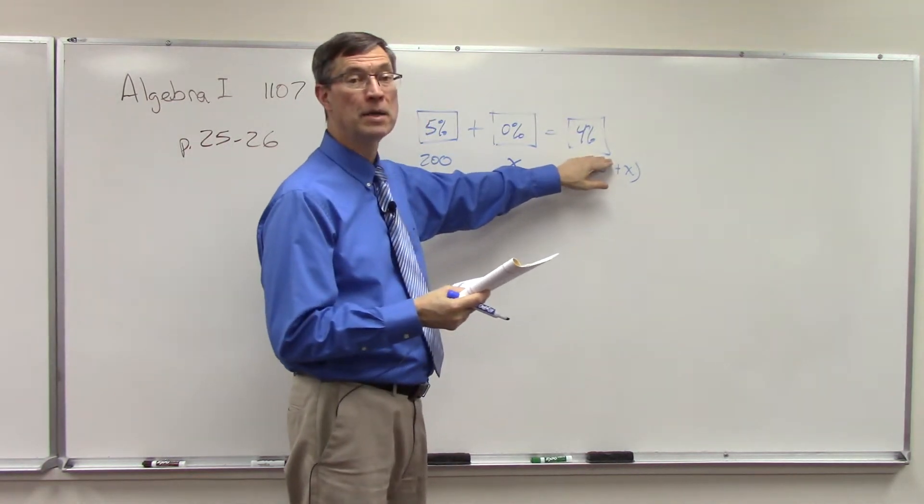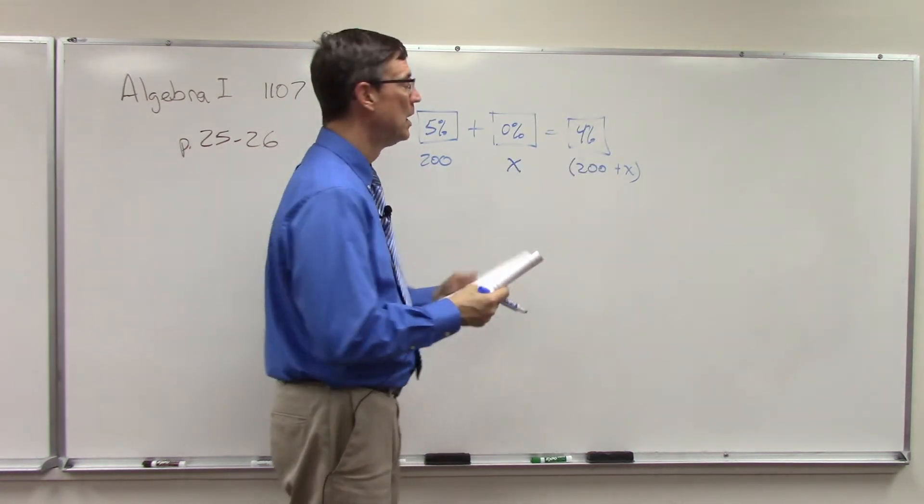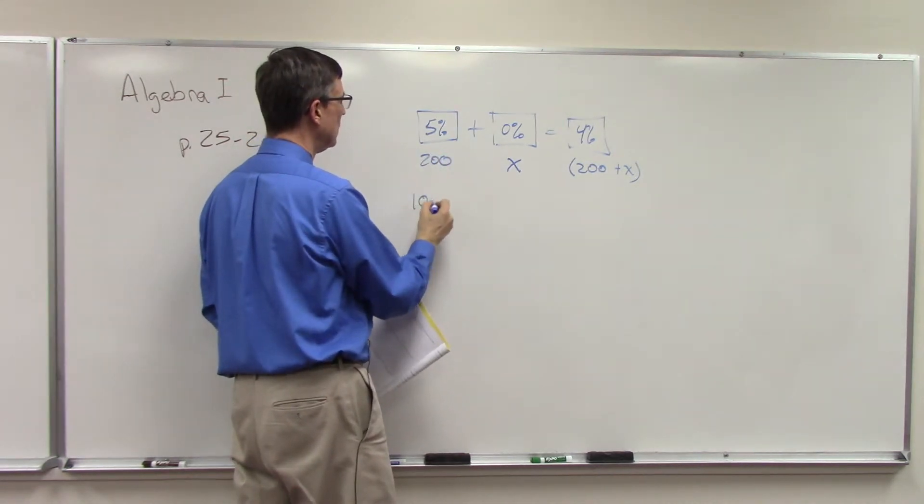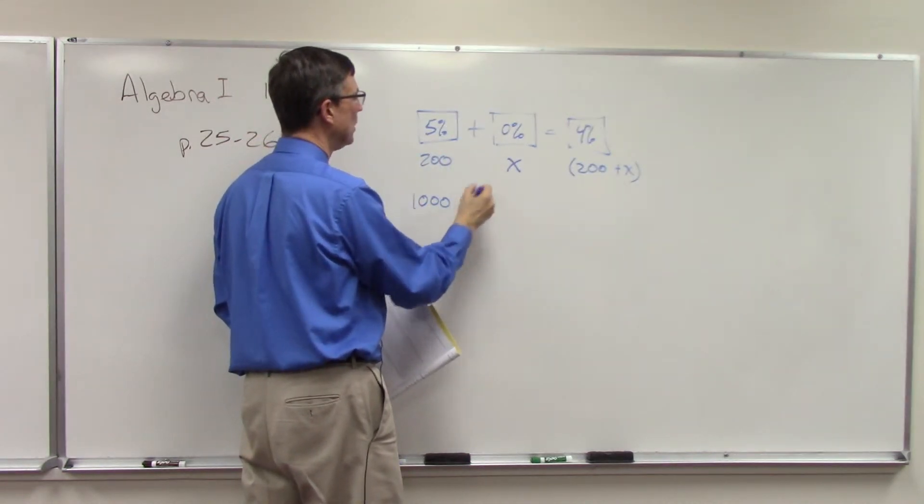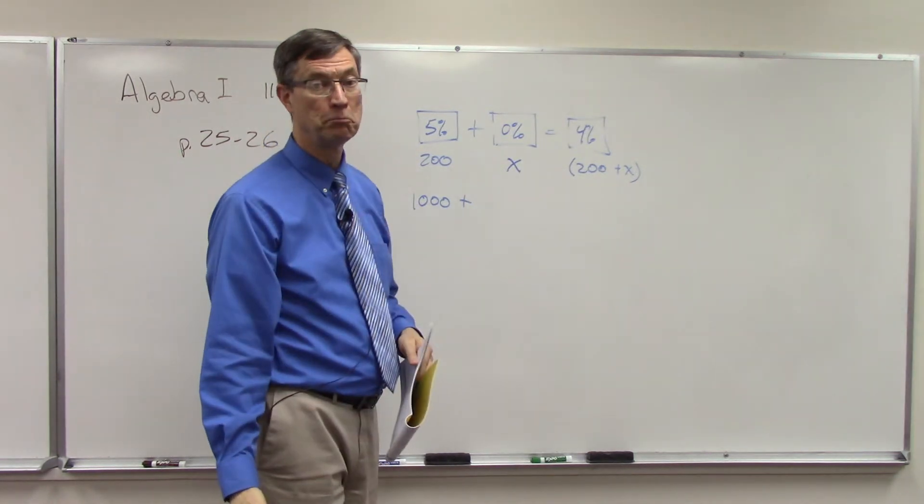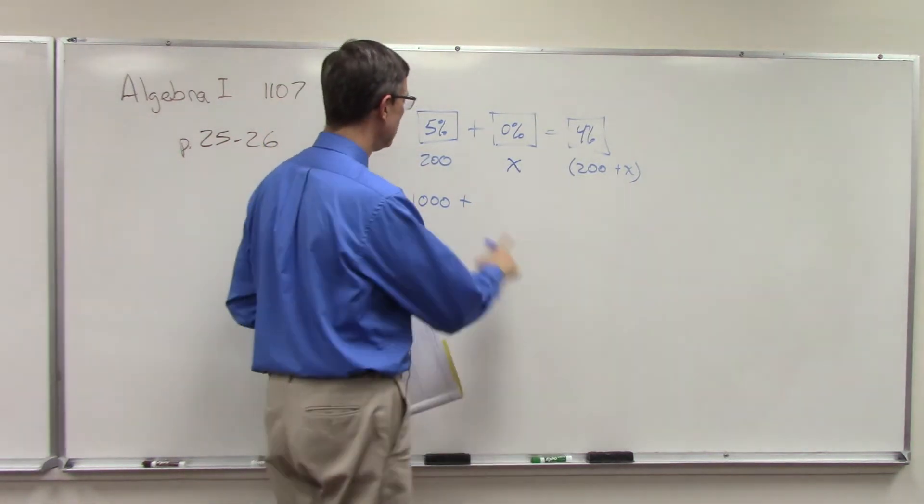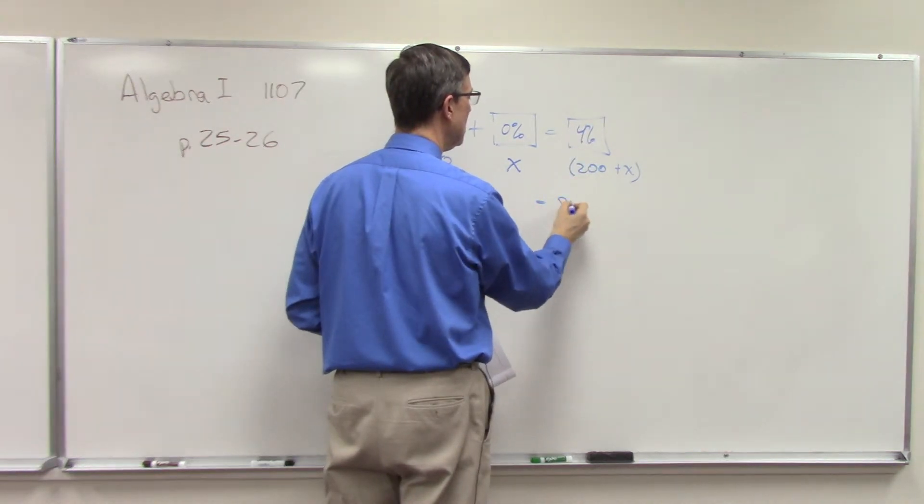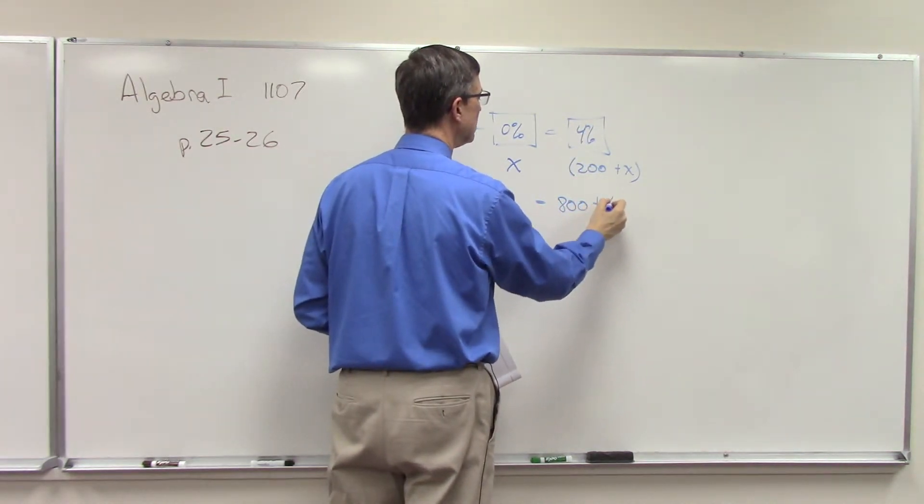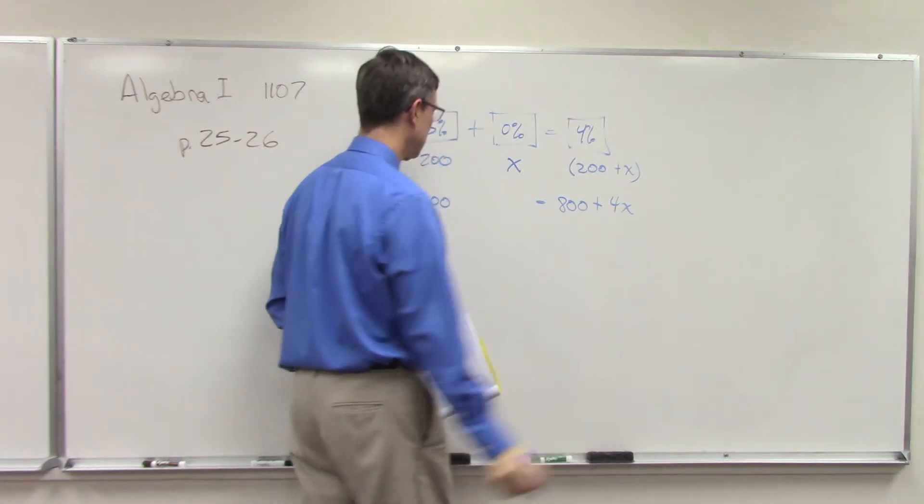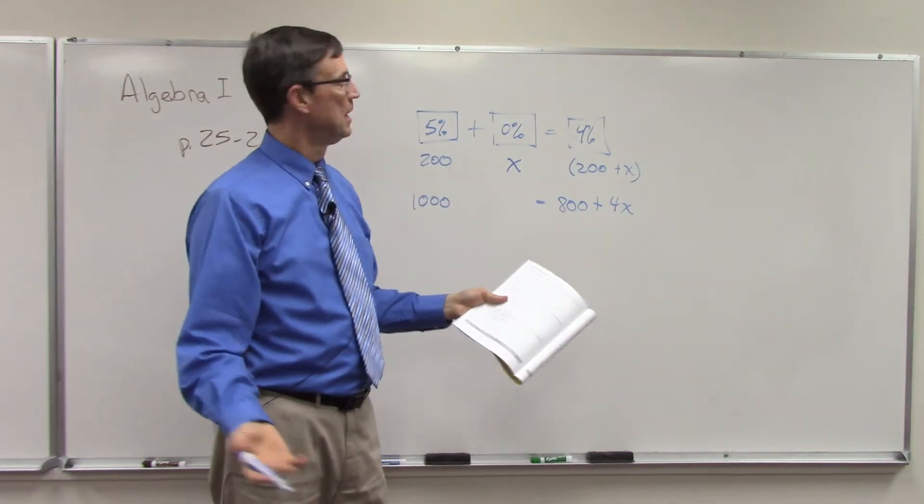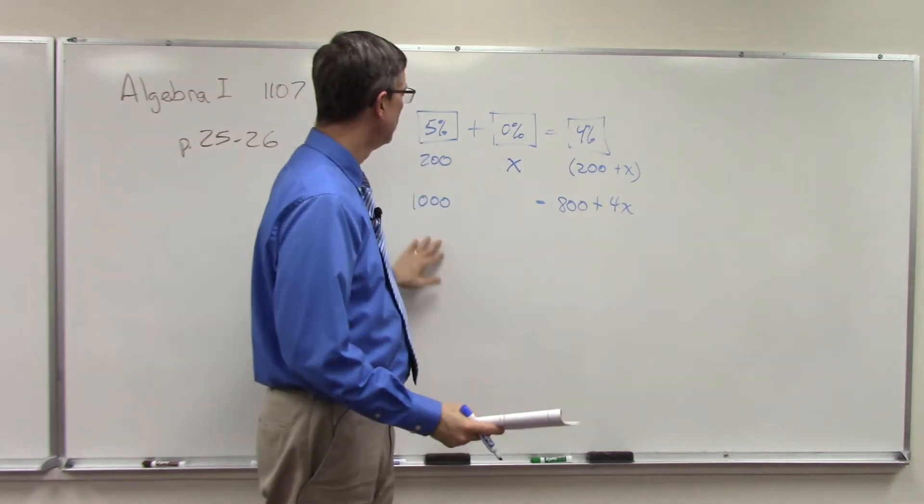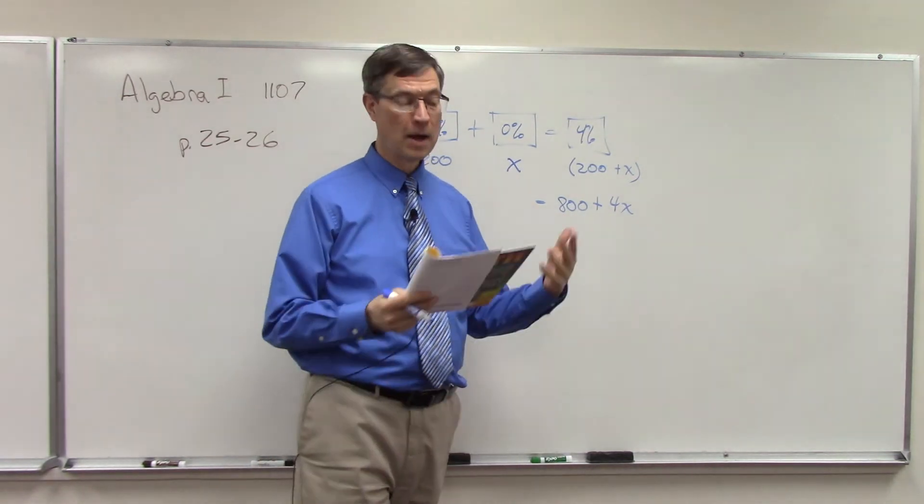Now we just multiply: 200 times 5 is 1000. Plus, guess what, 0 times x is 0, so actually I don't even need that. Equals, distribute, 800 plus 4x. Real simple. Now you can just solve for x, subtract 800, finish solving, and you'll know how many pounds.